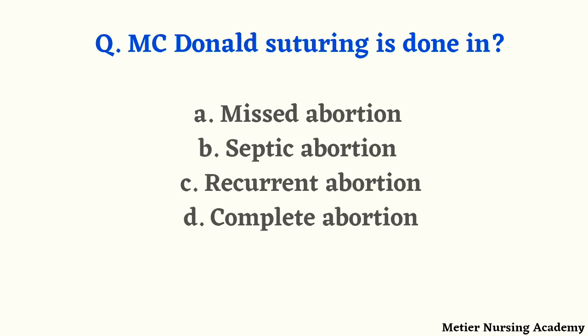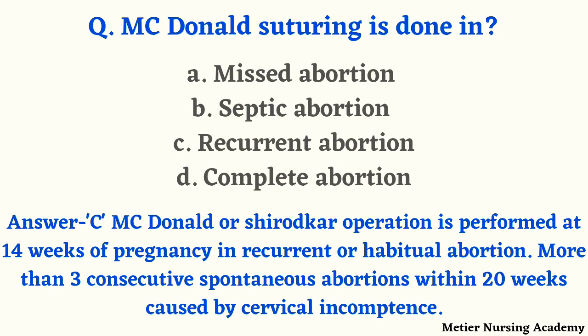McDonald suturing is done in — missed abortion, septic abortion, recurrent abortion, or complete abortion? The right answer is option C, recurrent abortion. McDonald or Shirodkar operation is performed at 14 weeks of pregnancy in recurrent or habitual abortion — defined as more than 3 consecutive spontaneous abortions within 20 weeks caused by cervical incompetence. This is the indication for McDonald suturing.